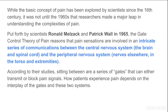Put forth by scientists Ronald Melzack and Patrick Wall in 1965, the gate control theory of pain reasons that pain sensations are involved in an intricate series of communications between the central nervous system — which involves the brain and spinal cord — and the peripheral nervous system, that is the nerves present in the torso and extremities. According to this study, sitting between are a series of gates, which can either transmit pain signals or block them. How patients experience pain depends on the interplay of these gates and the two systems.